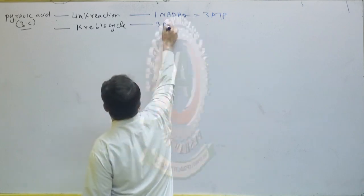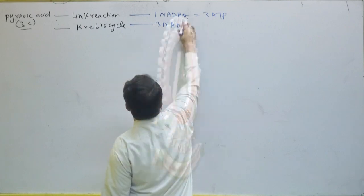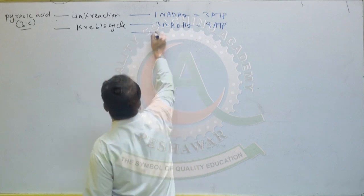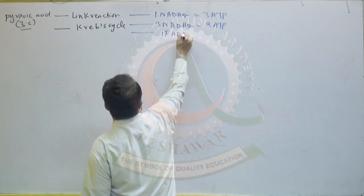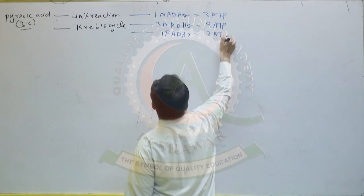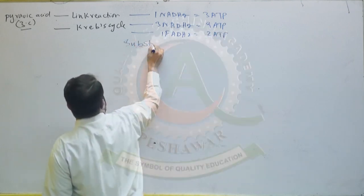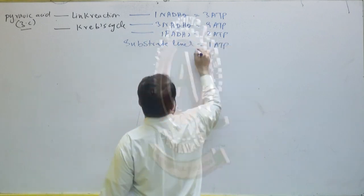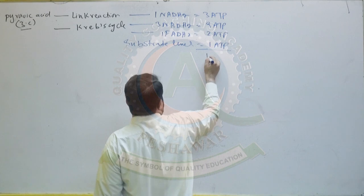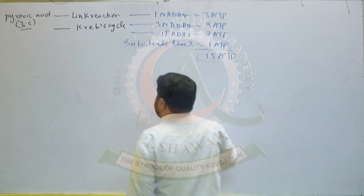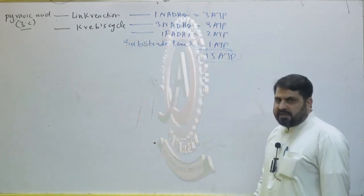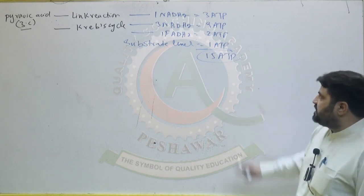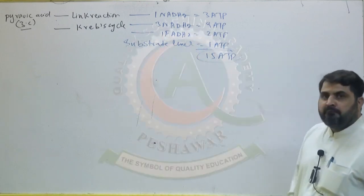Every Krebs cycle produces three NADH2, which is equivalent to nine ATP, and one FAD is produced which is equivalent to two ATP. Additionally, at the substrate level, one ATP is also generated. So total 15 ATP are produced from one pyruvic acid. Of these 15 ATP, 14 are oxidative and one is substrate level.